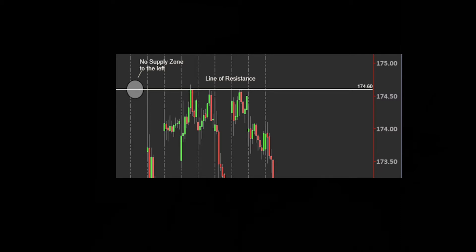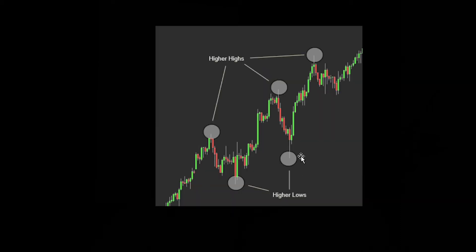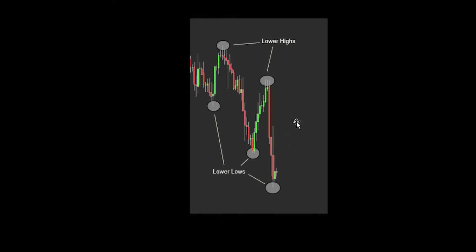Trend — this is the direction that price is moving. In a trend up, we will see that we are creating higher highs and higher lows — that's how we define a trend up. Trend down is the opposite, where we have lower highs and lower lows.